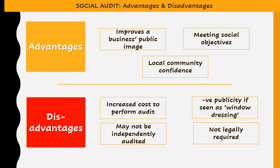Window dressing means the social audit is used to blur the company's actual financial performance — if financial performance is not very good, focusing on social objectives acts as a camouflage. Additionally, social audits are not legally required, so not all companies implement them. When something is not legally required, not every company will do it, and that itself can be considered a disadvantage.